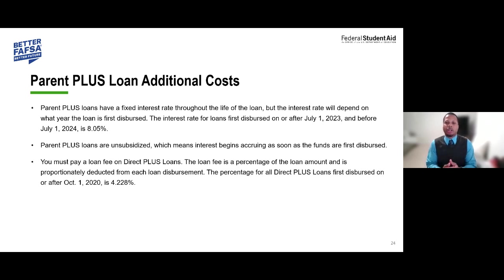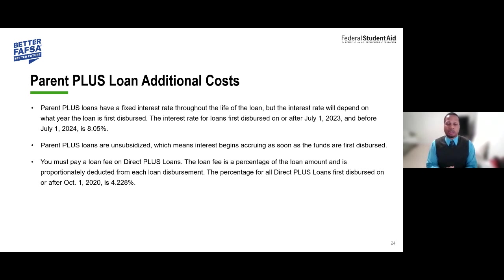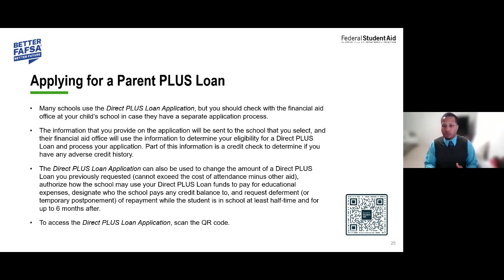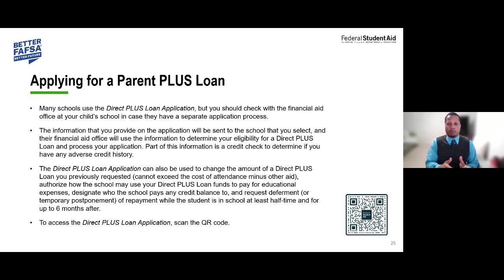There is a loan fee — a percentage of the loan amount deducted from each disbursement, currently at 4.228%. When applying for the Parent PLUS loan, many schools use the standard Parent PLUS loan application, but if your school has a separate application process, follow that instead. All information from the application is sent to the selected school, and the financial aid office uses it to determine eligibility for the Parent PLUS loan.